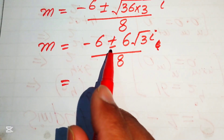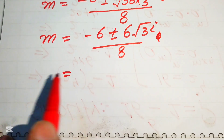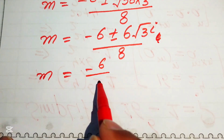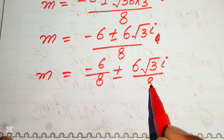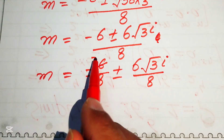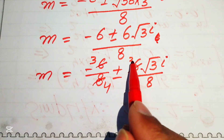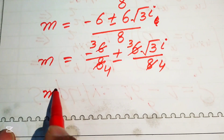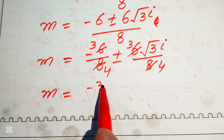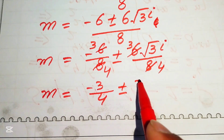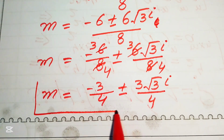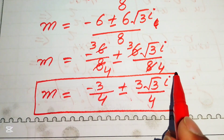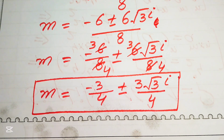Breaking the fraction: m = −6/8 ± 6√3·i/8. Simplifying, −6/8 = −3/4 and 6/8 = 3/4, giving the remaining two complex roots as m = −3/4 ± (3√3/4)i. These are the three roots of the equation. Thank you for watching — please subscribe for more videos.